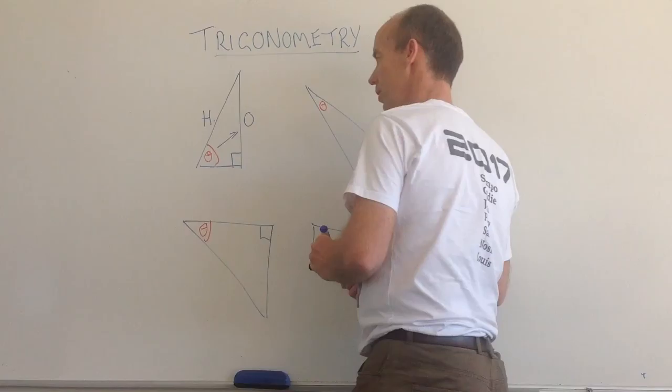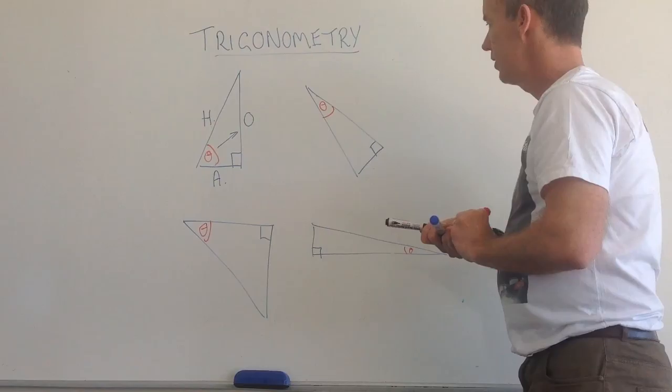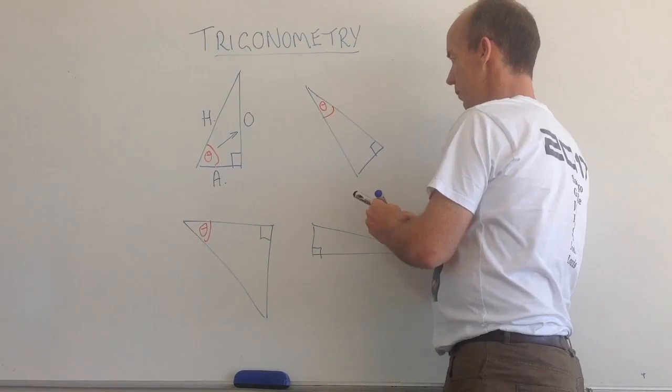My longest side is opposite the right angle. So that's going to be my hypotenuse. And the side next to the angle is the adjacent side.